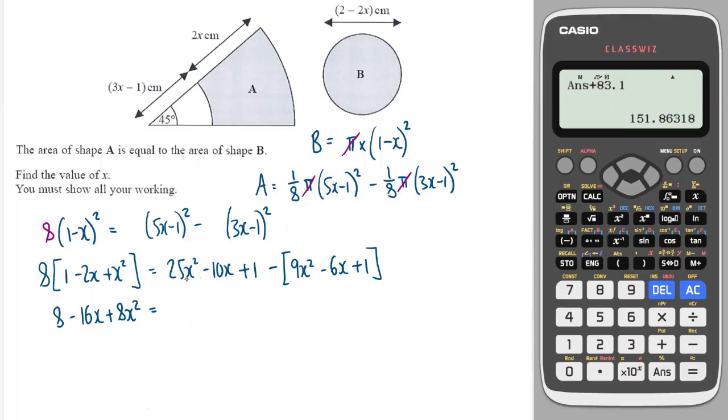I've got 25x squared minus 9x squared is 16x squared. I've got minus 10x minus minus 6x, which is minus 4x. And then I've got 1 minus 1, which is just going to cancel out.